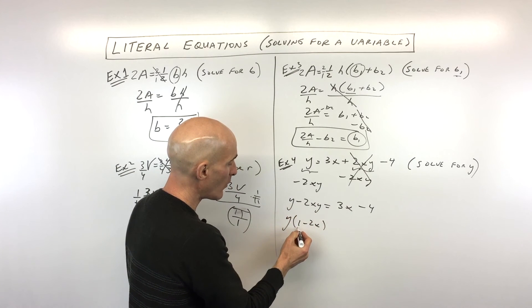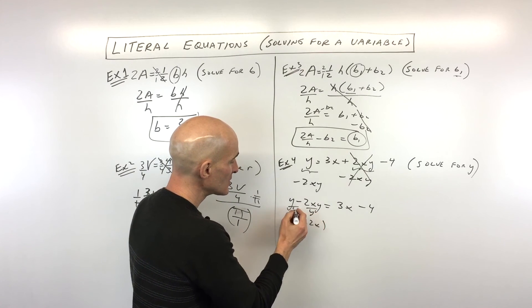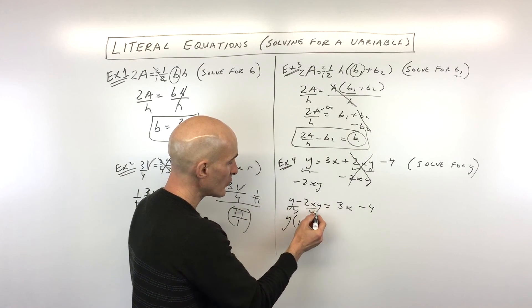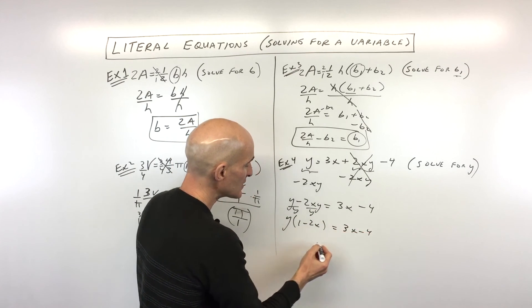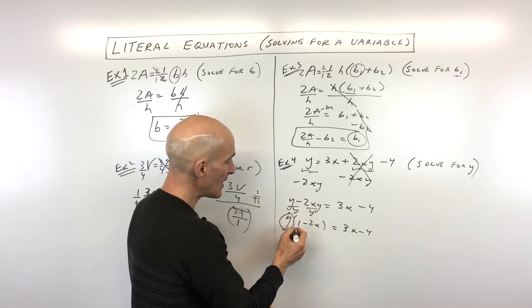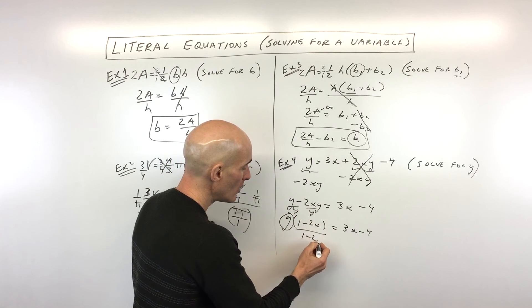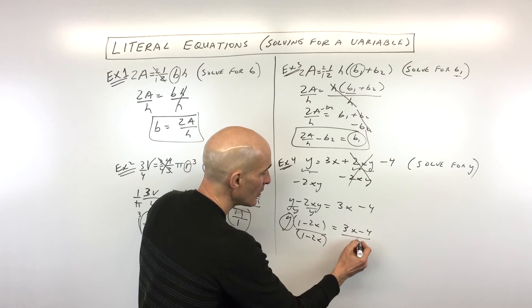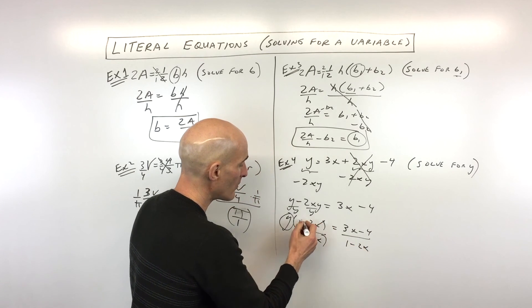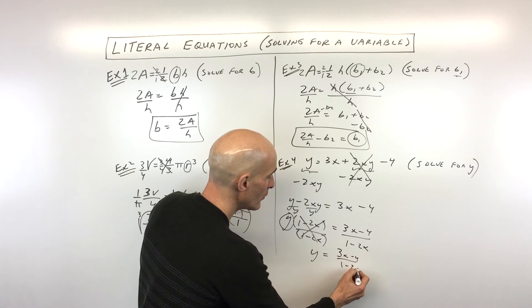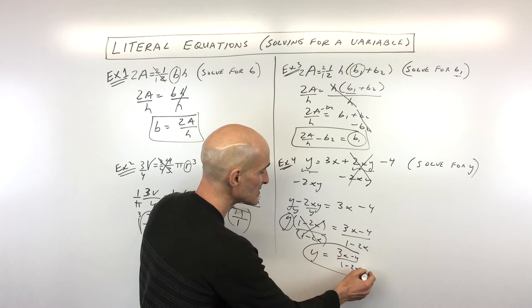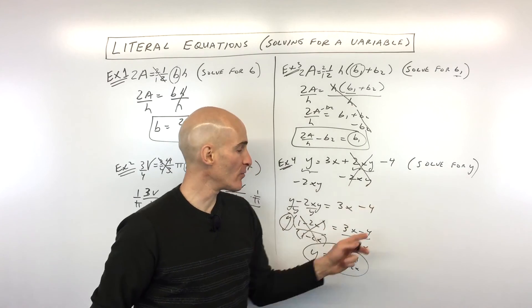But you can see these both have a Y. Let's go ahead and factor the Y out. Okay, so meaning we're going to divide these both by Y, right? So that gives you Y over Y is 1. Here the Y's cancel. You get 2X. Okay, so Y times 1 minus 2X equals 3X minus 4. And then now to get Y by itself, what's the opposite of multiplying by 1 minus 2X? Well, that would be to divide by 1 minus 2X. So now we have Y equals 3X minus 4 over the quantity 1 minus 2X. And you solve for your desired variable Y.